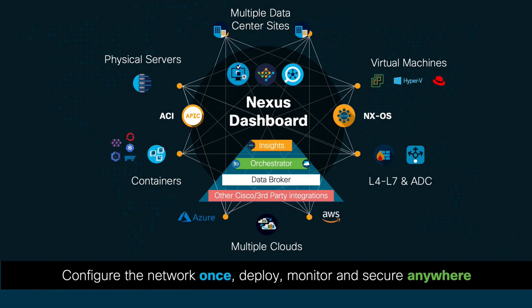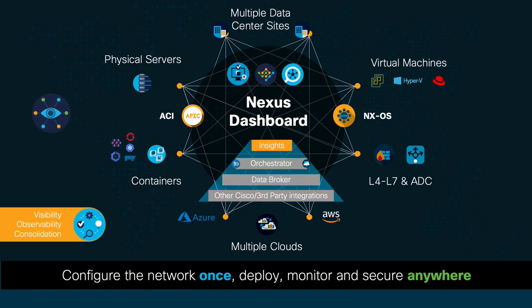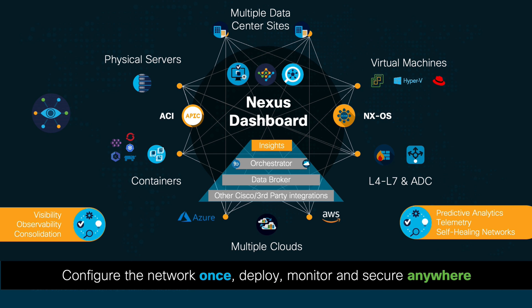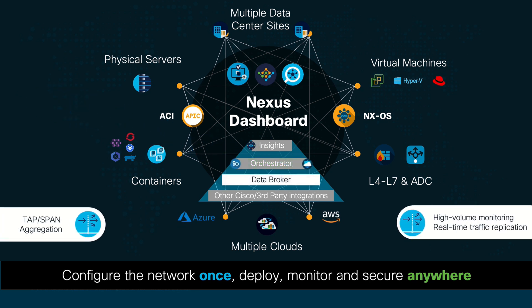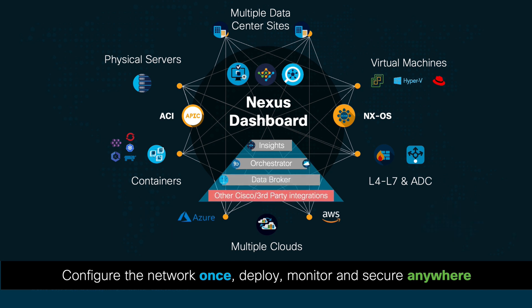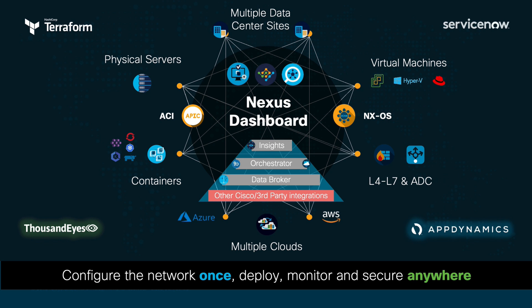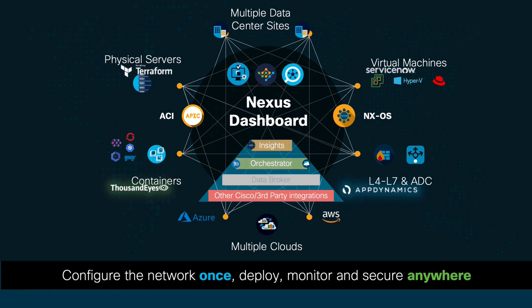There are multiple services and integrations that can be enabled on Nexus Dashboard, such as Insights, which provides consolidated visibility for all your sites and delivers smart correlation with predictive analytics and self-healing networks. Or Orchestrator, which automates data center interconnect and cloud interconnect across sites with a single and consistent policy model. Or Data Broker, which automates TAP and SPAN aggregation for scalable monitoring solutions. In addition, Nexus Dashboard can integrate with multiple Cisco and non-Cisco products such as AppDynamics, ServiceNow, Terraform, and VMware, to name a few, delivering a consolidated operational model that can be normalized across clouds.